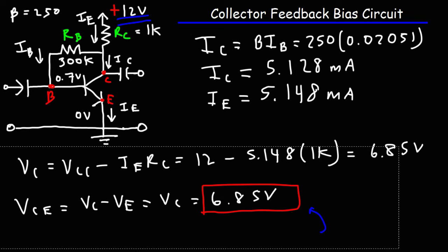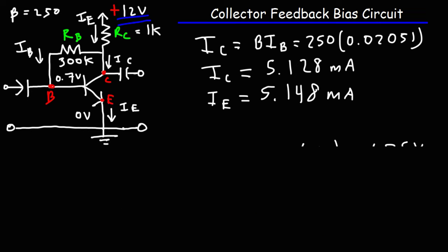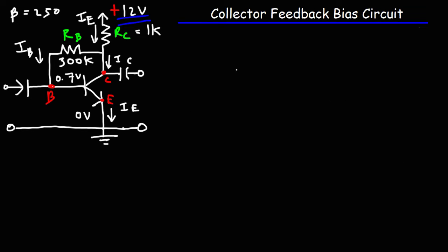Now let's talk about the advantages of this circuit. When temperature goes up, the DC beta of the transistor increases, which means that for a given base current, IC goes up. There is a maximum collector current value; once reached, the transistor enters saturation mode.